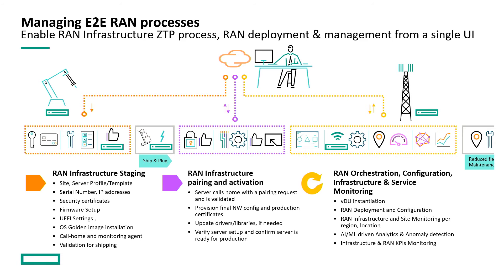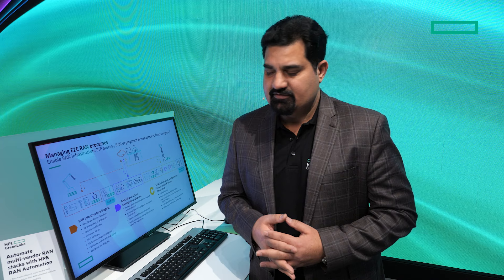Many of our customers — mobile network operators — when they embark on a RAN transformation journey, there are some challenges that they have to face. For example, when they're rolling out disaggregated RAN, it requires certain system integration because there are components from multiple vendors that need to be managed together. We provide an automation solution that can help deploy a multi-vendor RAN with remote zero-touch provisioning, to avoid manual interventions on-site and manage the whole stack remotely with a common tool and common set of processes.